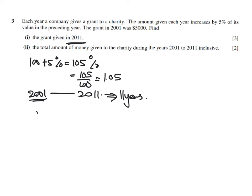So find the grant given in 2011. So AR, use the formula AR^(N-1). We have 11 years. So on the 11th term, so TN or T11. So this is T11.